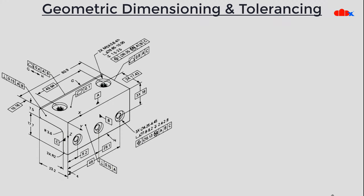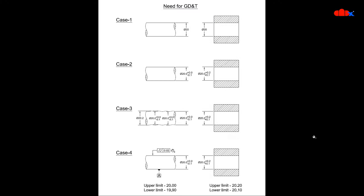The actual difference is that general dimensioning and tolerancing controls the size of the part, while GD&T controls the shape of the part. In this PDF I have four different cases. Some dimensions shown are general dimensioning and tolerancing, and one is geometric dimensioning and tolerancing. To further understand this difference, let's look at the need of GD&T through these cases.